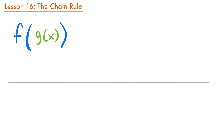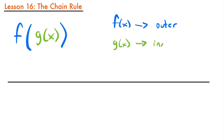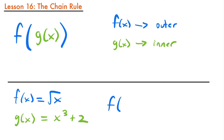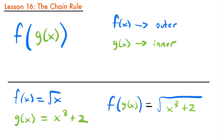A composite function is basically when we have one function inside of another function. We have f of x and g of x, where g of x is inside of f of x. Sometimes we call them inner and outer functions, where f of x is the outer function and g of x is the inner function. For example, if f of x equals the square root of x and g of x equals x cubed plus 2, the composite function f of g of x would be the square root of x cubed plus 2.